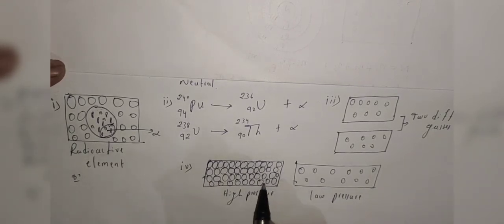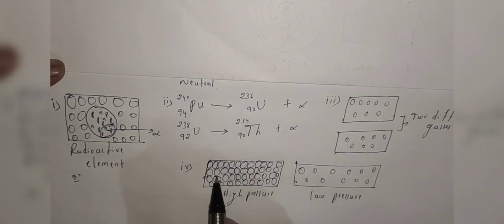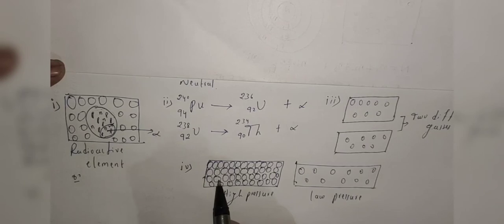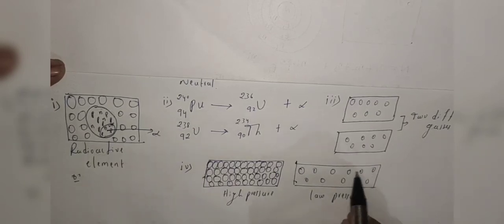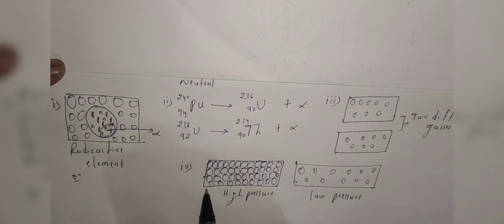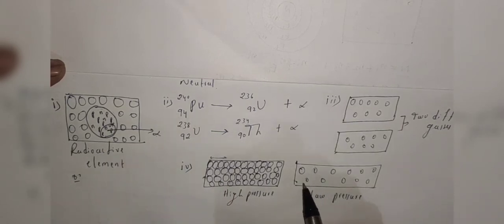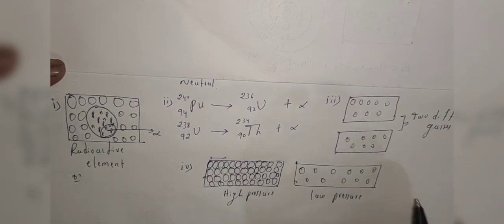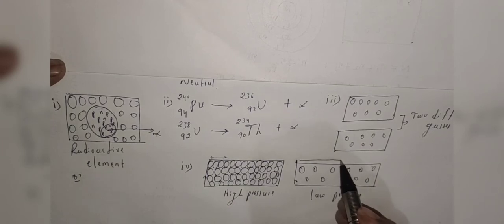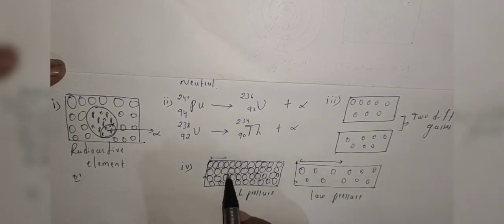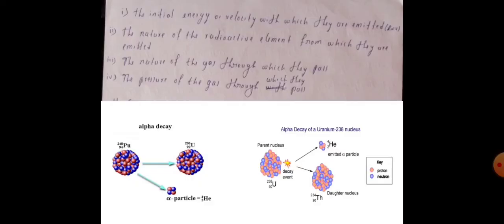The fourth point is that the range depends on pressure. Here I have two containers of the same size. In the first container we have added more molecules or atoms compared to the second container. Because of the greater number of atoms, the alpha particle travels a very small distance in the first container. In the second container, the number of atoms is very small, so the alpha particle can travel a larger distance compared to the first one.